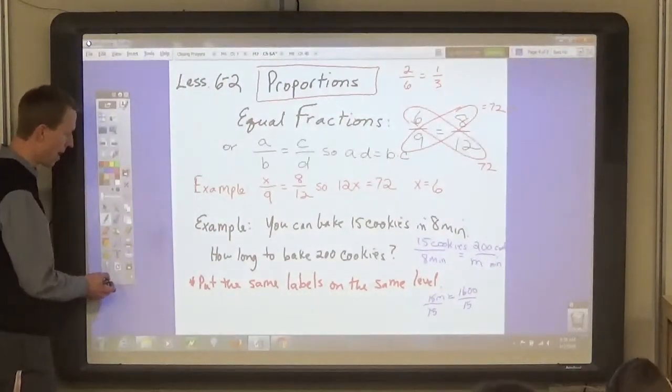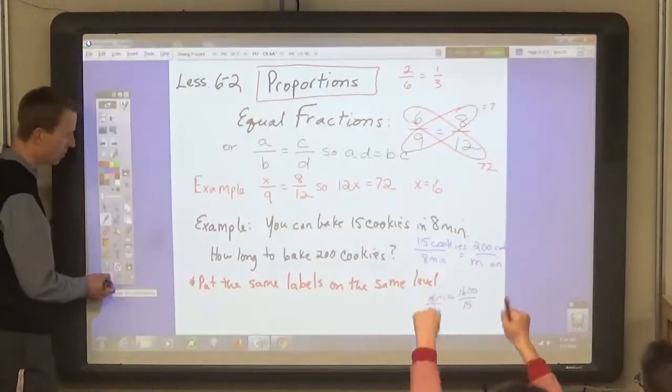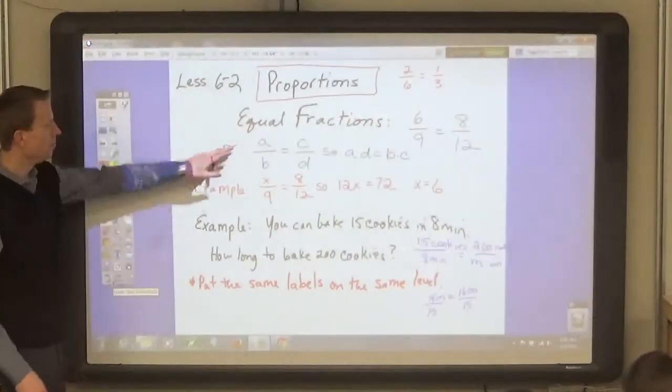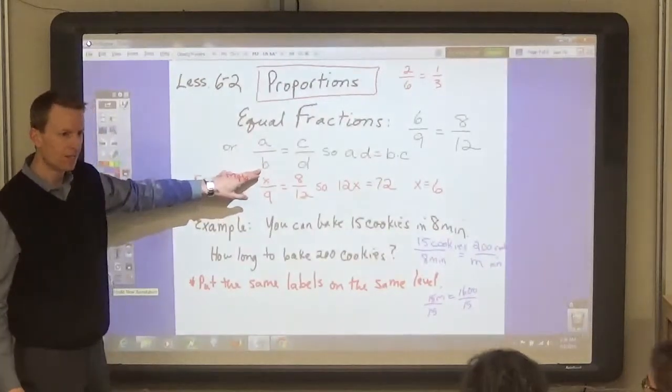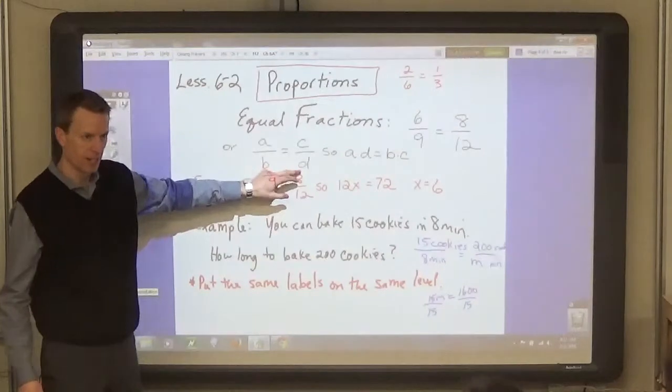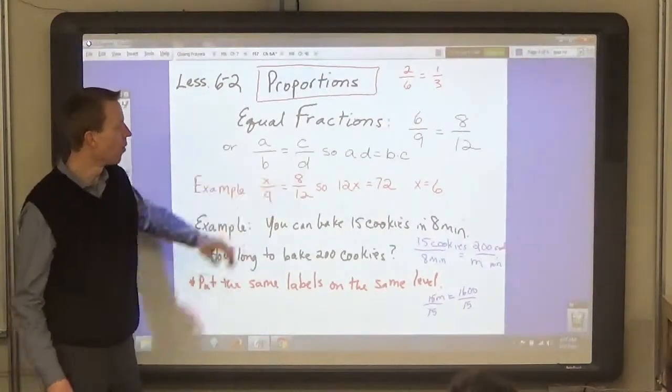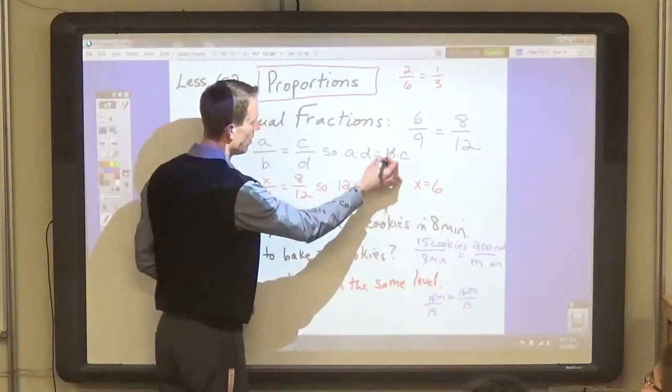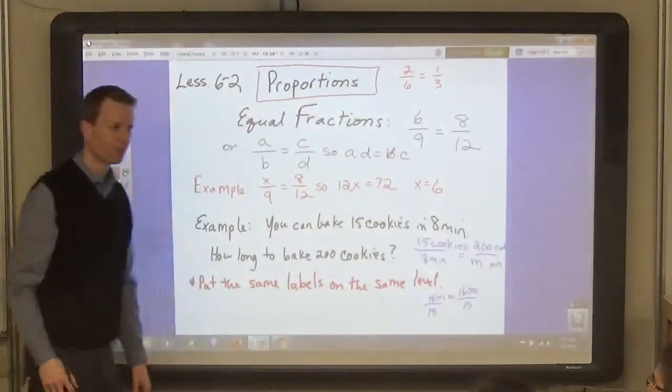Let's look at this in terms of algebra. A over B is proportional to C over D. In other words, A times D is equal to B times C.